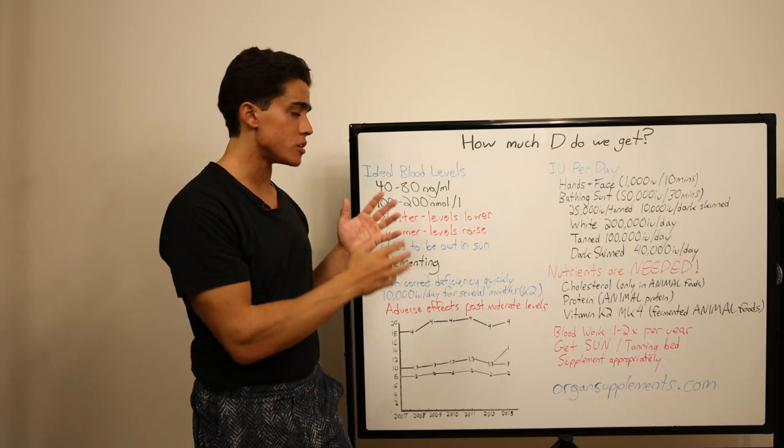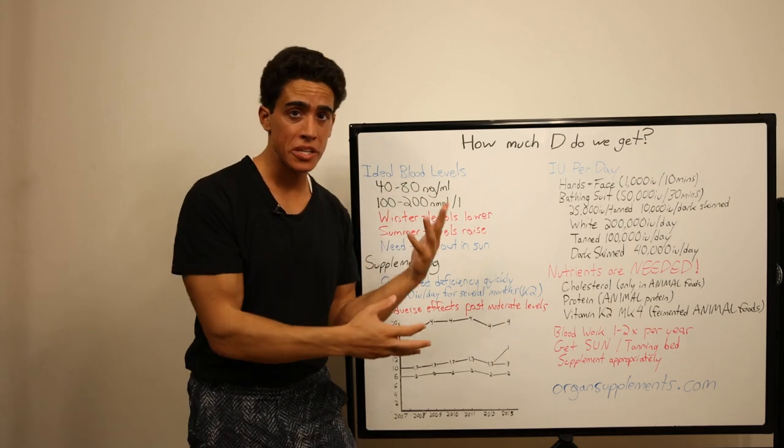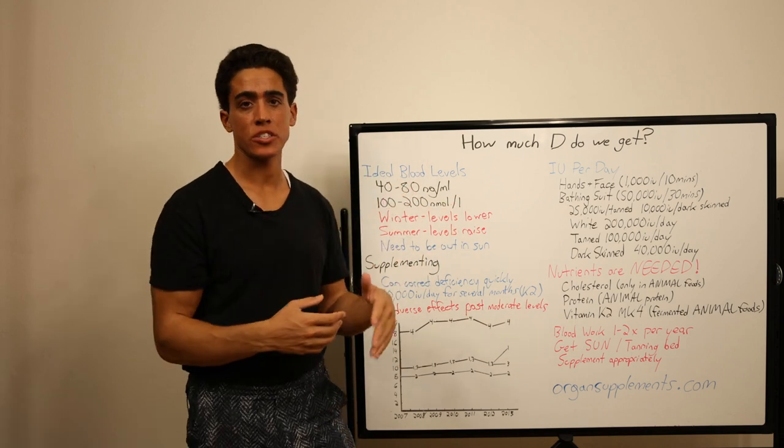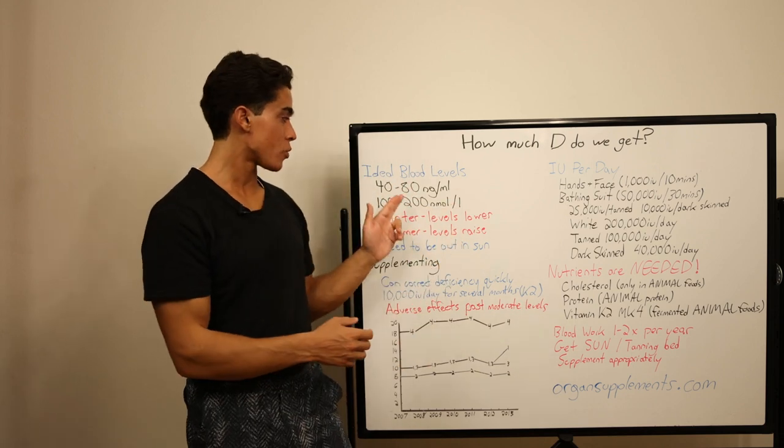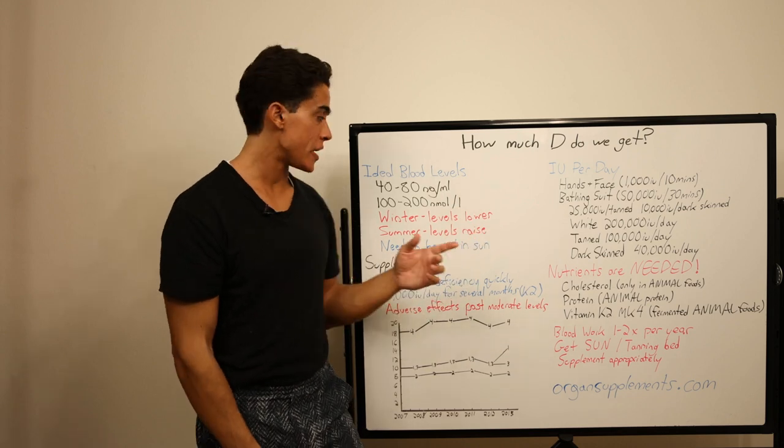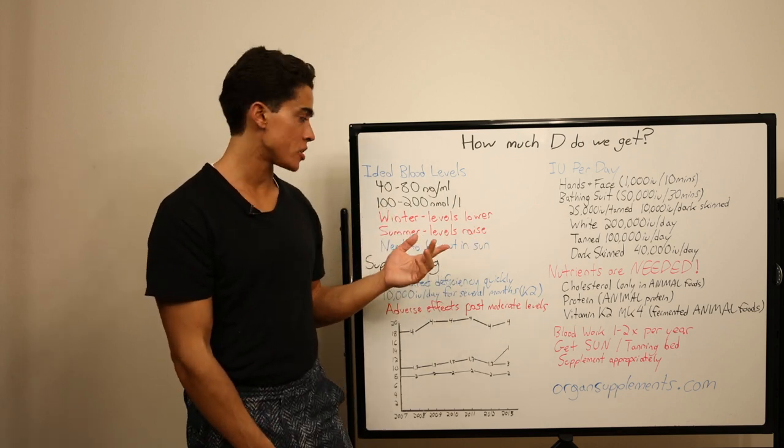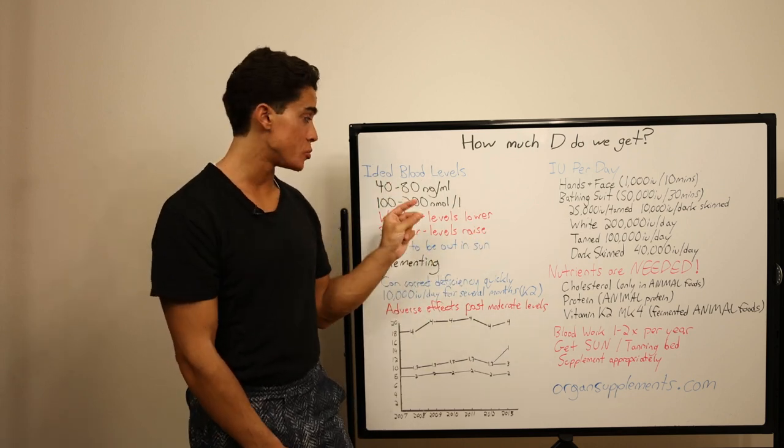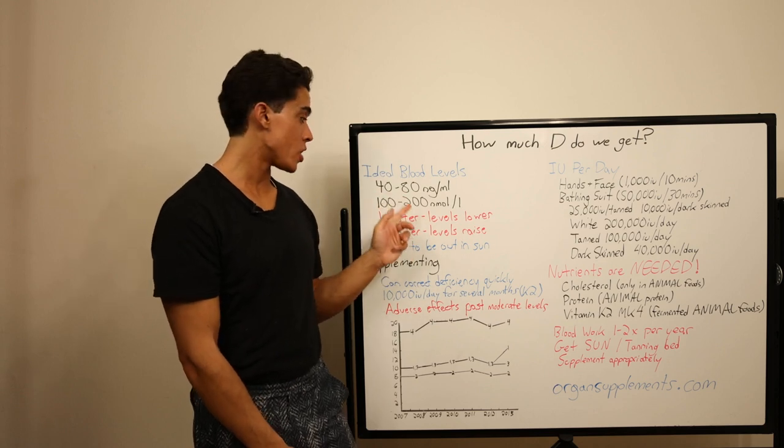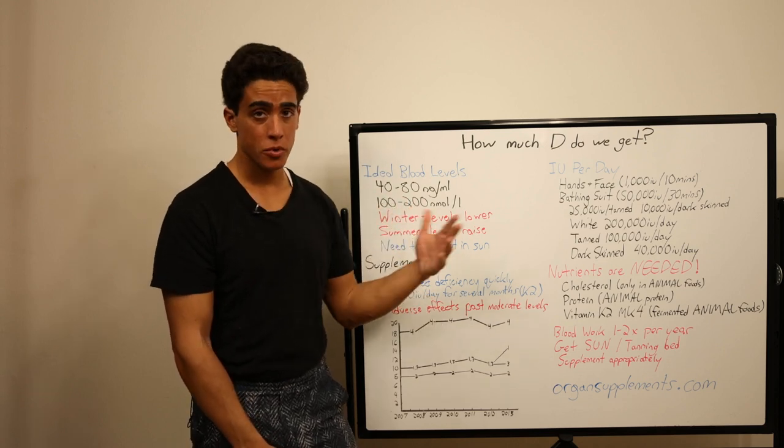We have a general idea of what blood levels should be from various organization recommendations: 40 to 80 nanograms per milliliter, and what's also used in certain European countries is nanomoles, which is 2.5 times nanograms, 100 to 200 nanomoles per liter.